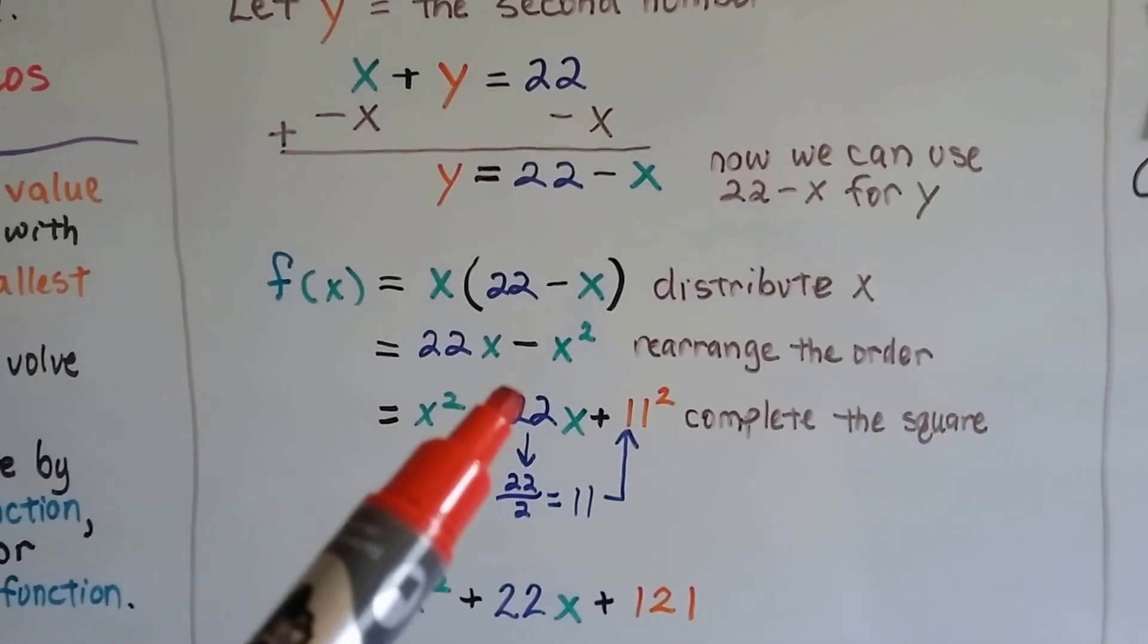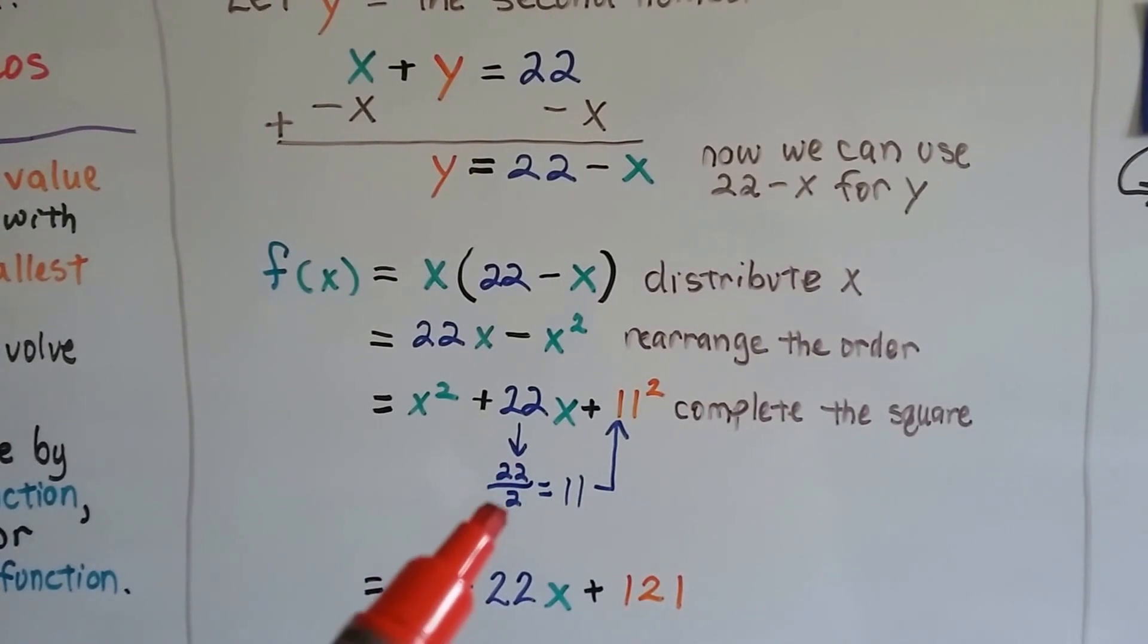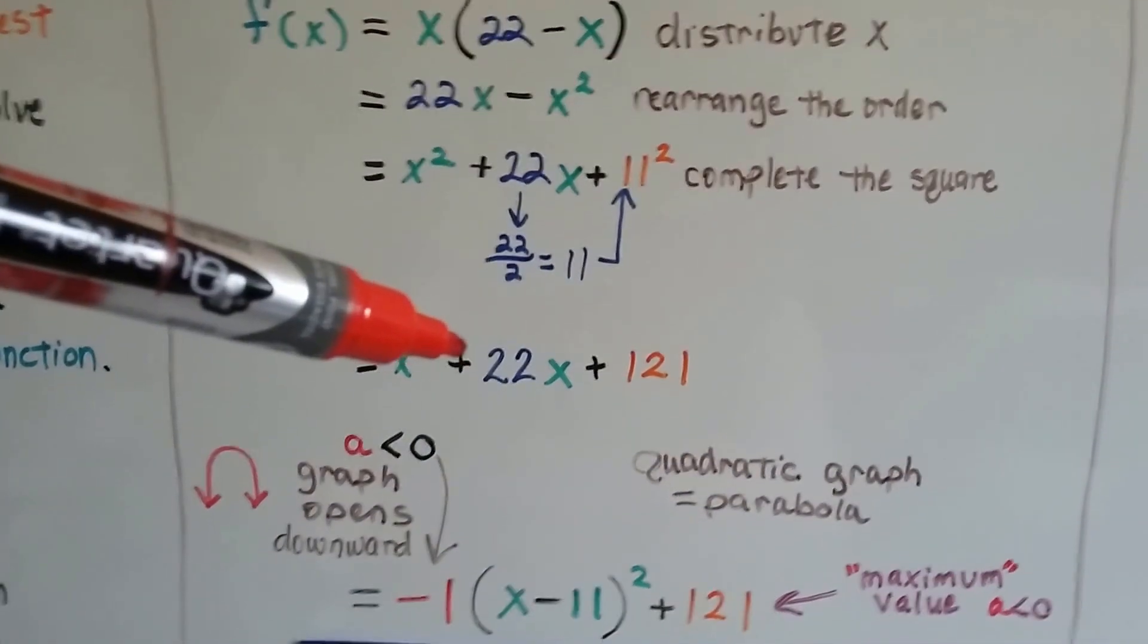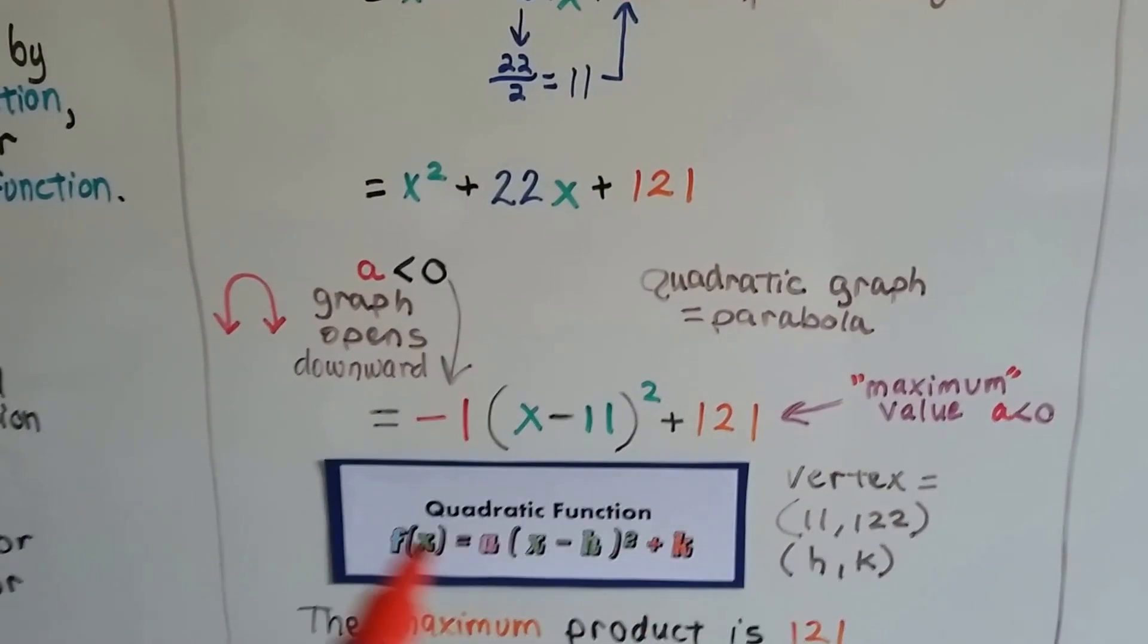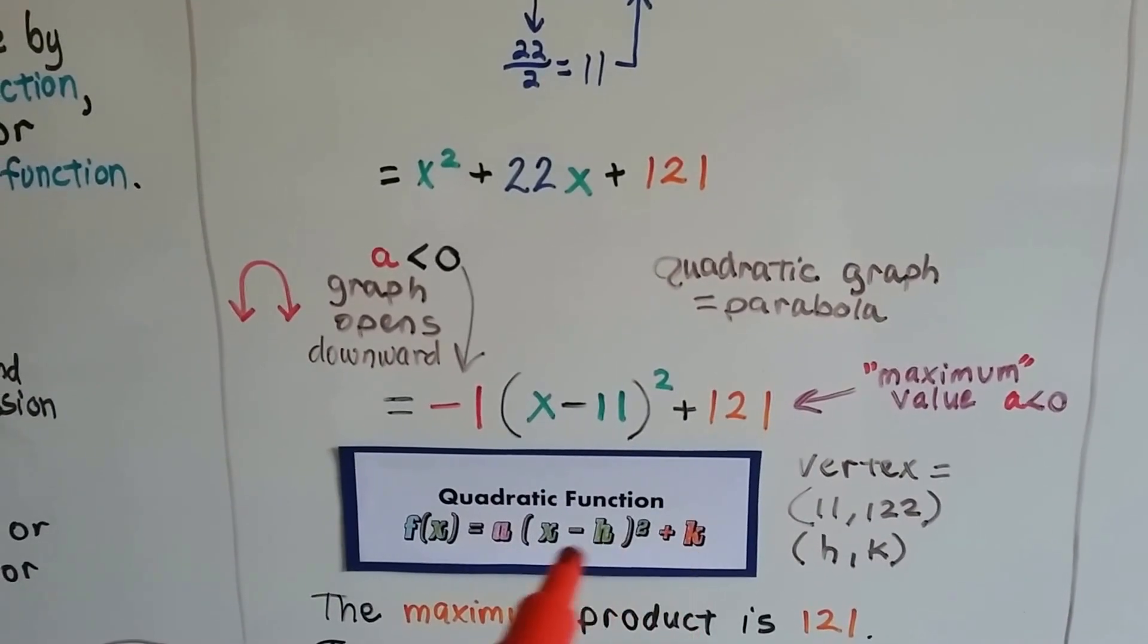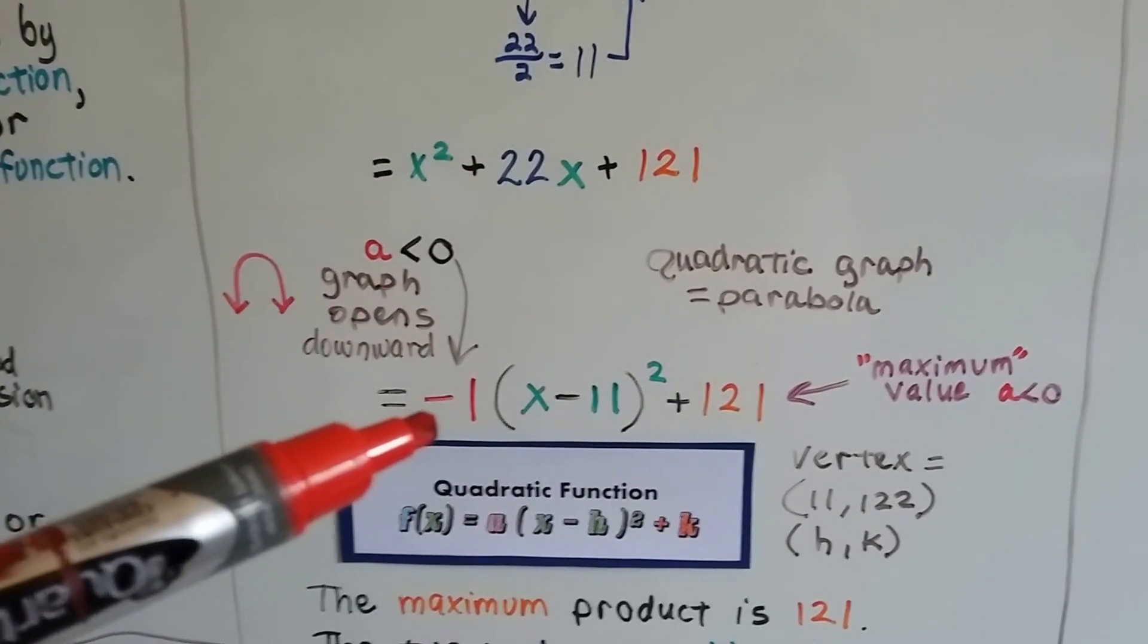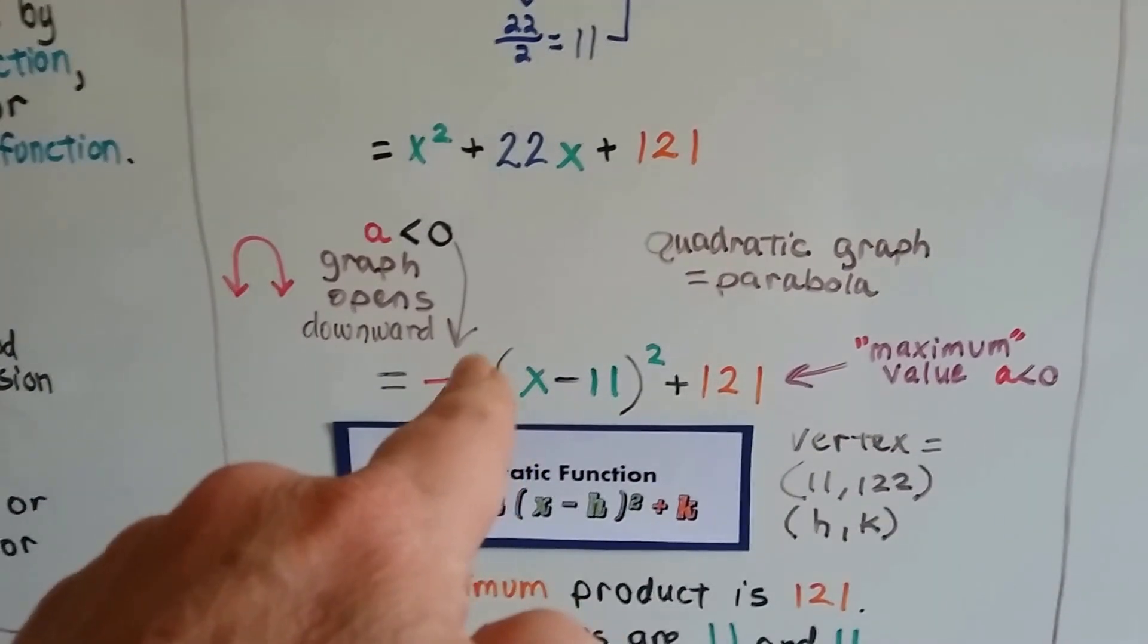We can complete the square. We divide this 22 coefficient in half by 2, that's 11, then square it to get 121. Because this is a plus sign and we want to write it in the form a(x - h)² + k, we need a minus sign, so we multiply by negative 1 out here.